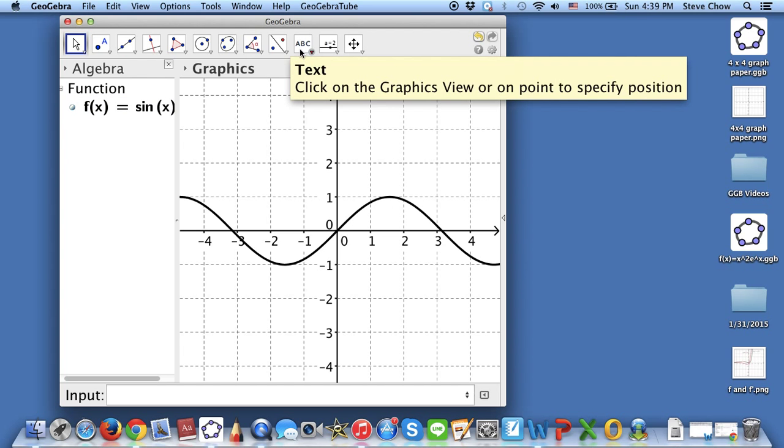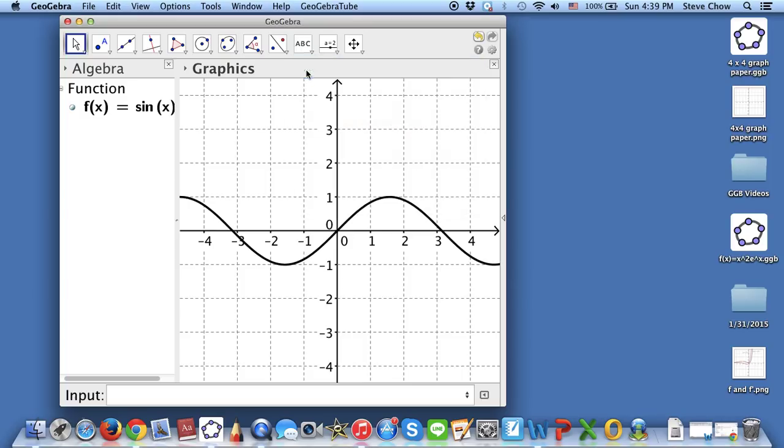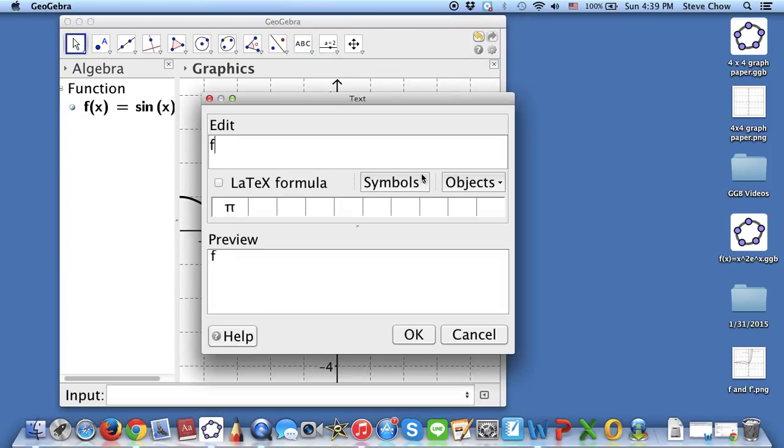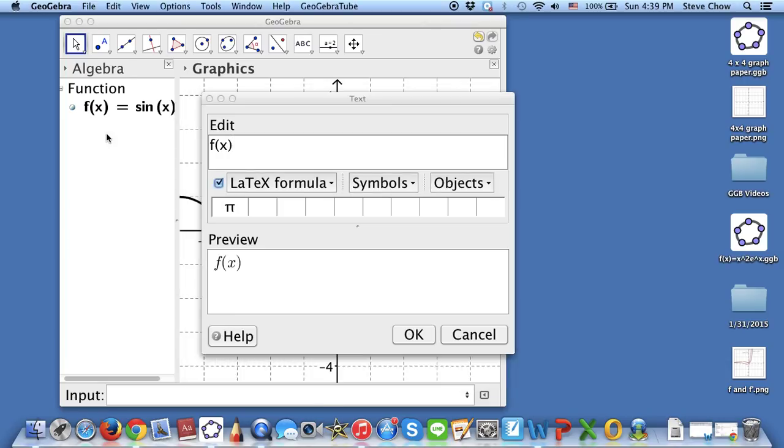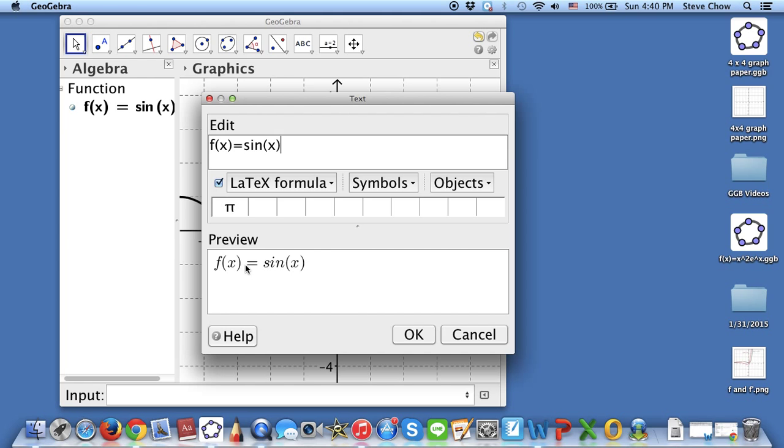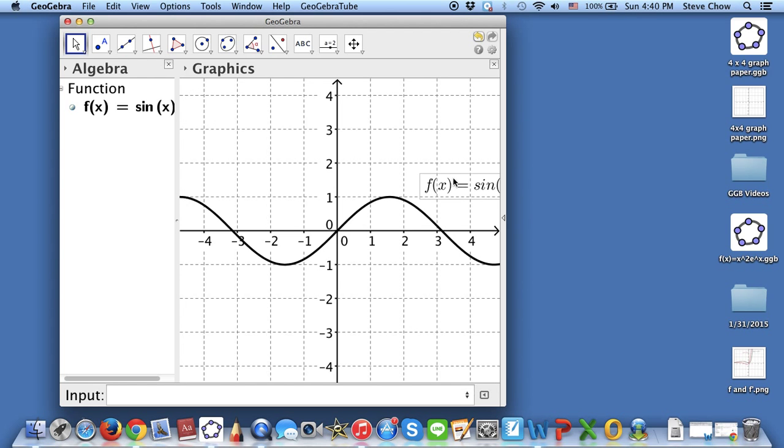So this is the sin function. If you go to text yourself, you can enter your own text. So click on this, f of x. And make sure you select LaTeX formula, so you can get a nice math print for the equations. f of x equals sin x, or maybe a parenthesis sin of x, like that. Okay, so this is our usual sin function curve.